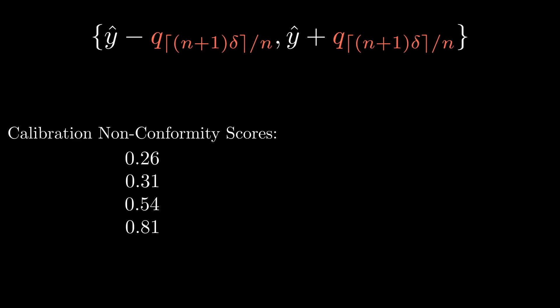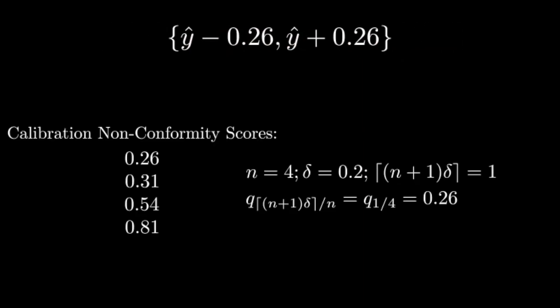The job of the subscript, the ceiling of n plus 1 times delta divided by n, is to pick a specific quantile depending on the values of n and delta. Let's discuss how the selection of the right quantile through the subscript takes place through an example. Our n is 4. Imagine the desired confidence level delta is 0.2. This will make the ceiling of n plus 1 times delta equal to 1, which means that the q that we have in the equation will be q subscript 1 over 4, or the first out of 4 available quantiles, or 0.26. So to get the 20 percent interval, you simply need to add and subtract 0.26 from y hat. You can of course repeat the exact same process for other values of the confidence level delta.